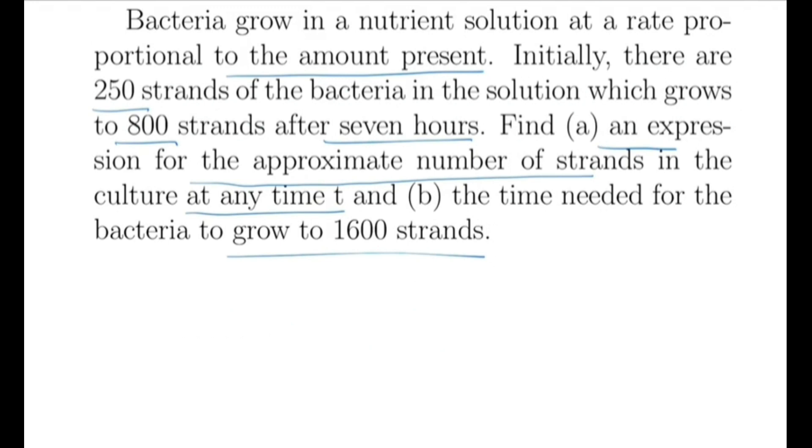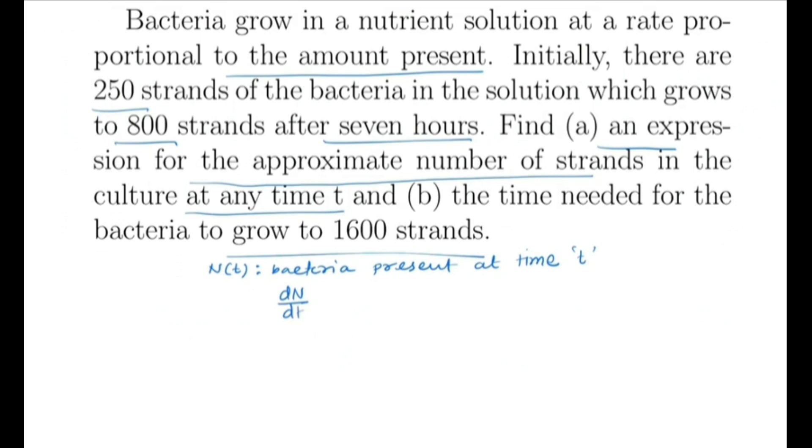Here also, we have suppose N(t) denotes the bacteria present at time t. By the condition that the rate is proportional to the amount present, then dN is proportional to N. So we have dN/dt equals kN. As we have seen before, we have N equals N₀ e^(kt), where N₀ is the initial amount. Here N₀ is given as 250, so we have N equals 250 e^(kt).